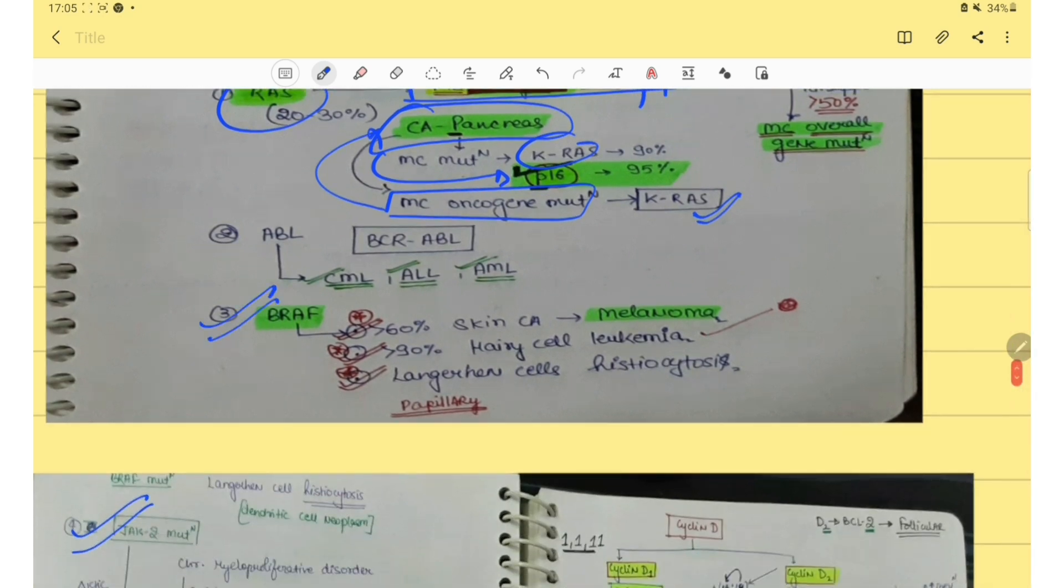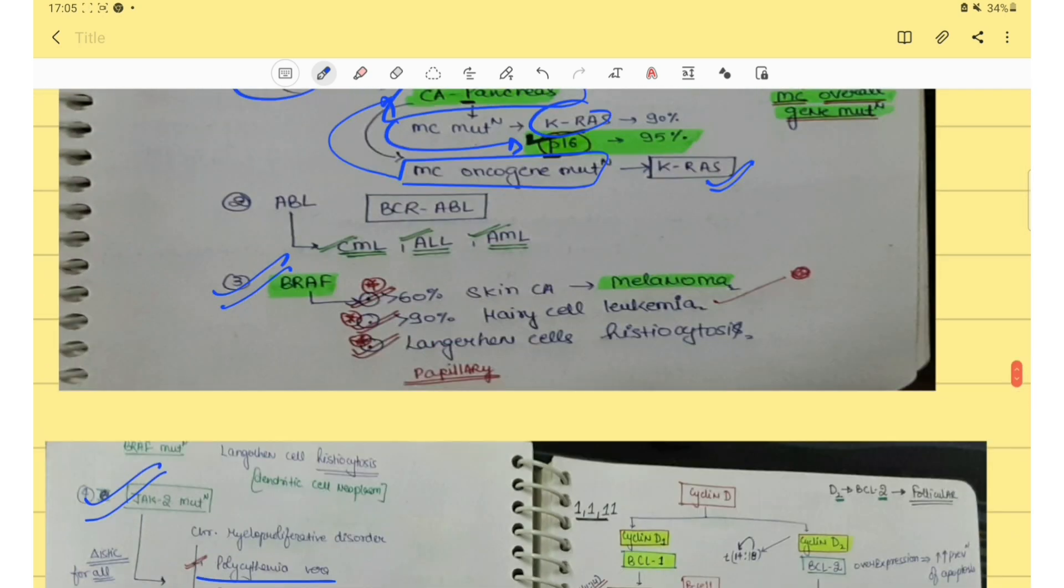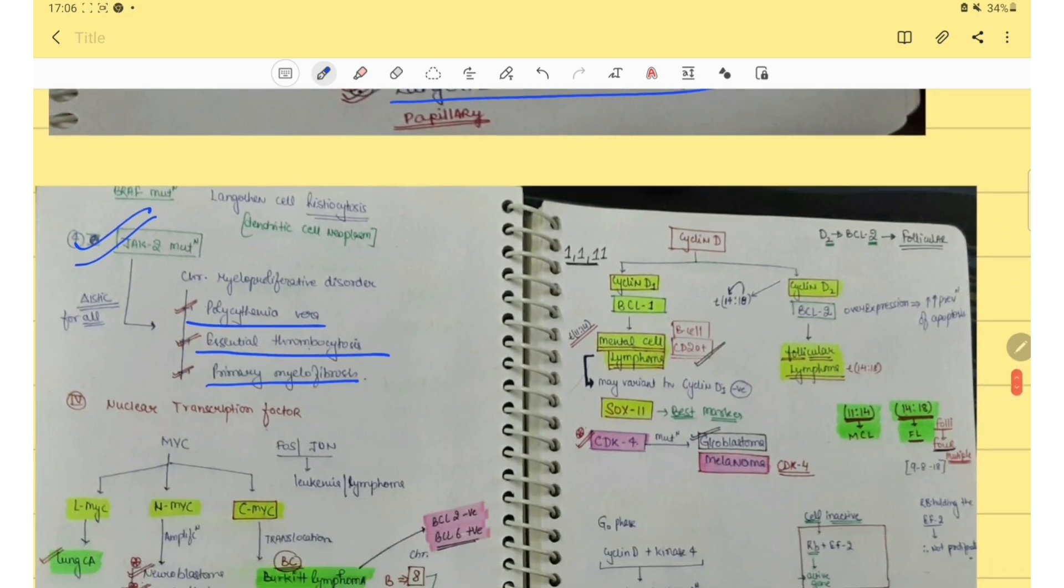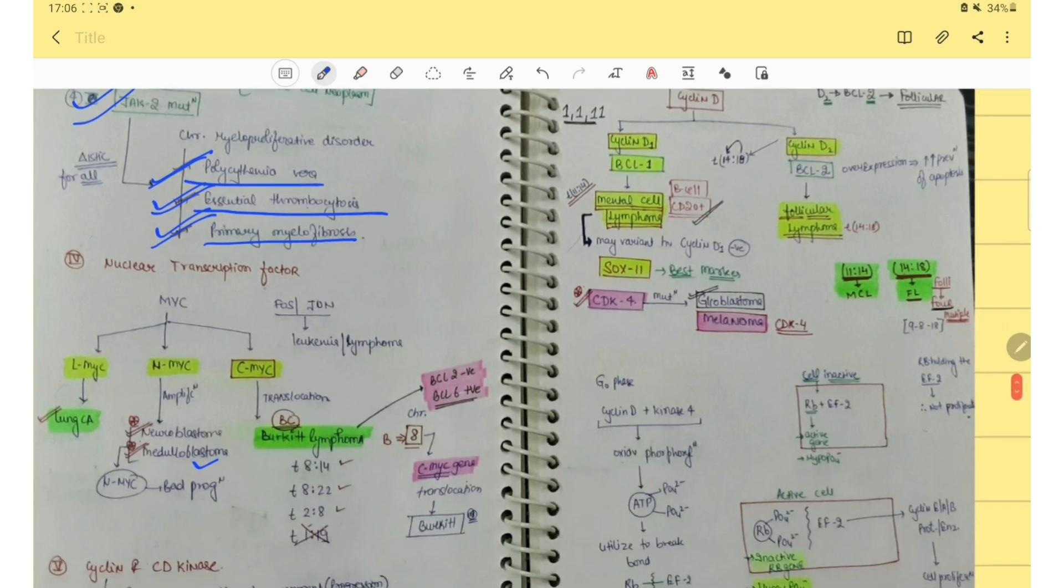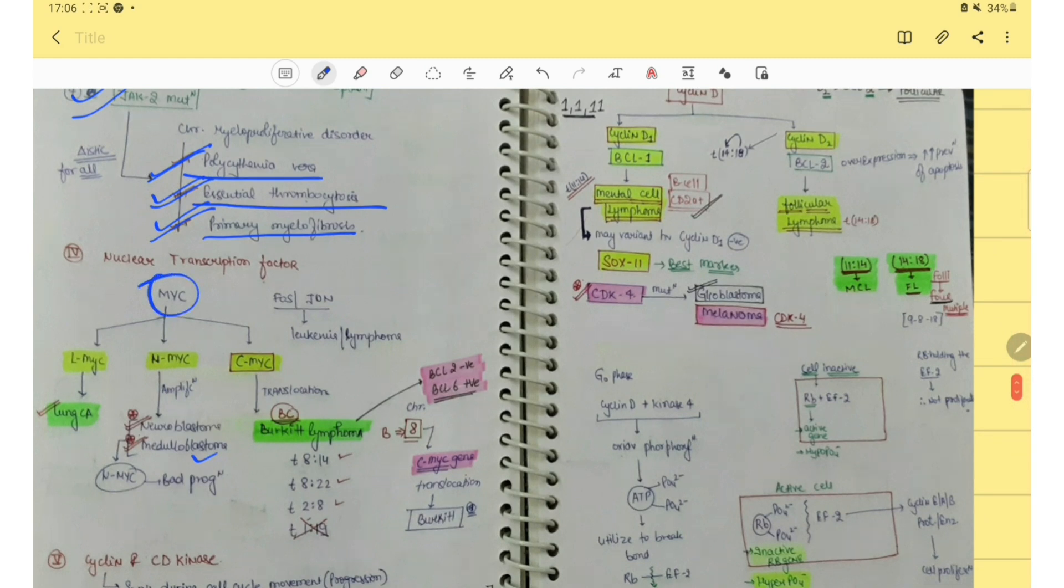Then BRAF mutation, this is also very important. Its mutation occurs in melanoma, hairy cell leukemia and LCH. Then JAK2 mutation. JAK2 mutation occurs in polycythemia vera, essential thrombocytosis and primary myelofibrosis. Then MYC mutation. L-myc, N-myc and C-myc. N-myc in neuroblastoma and medulloblastoma and C-myc in Burkitt's lymphoma.